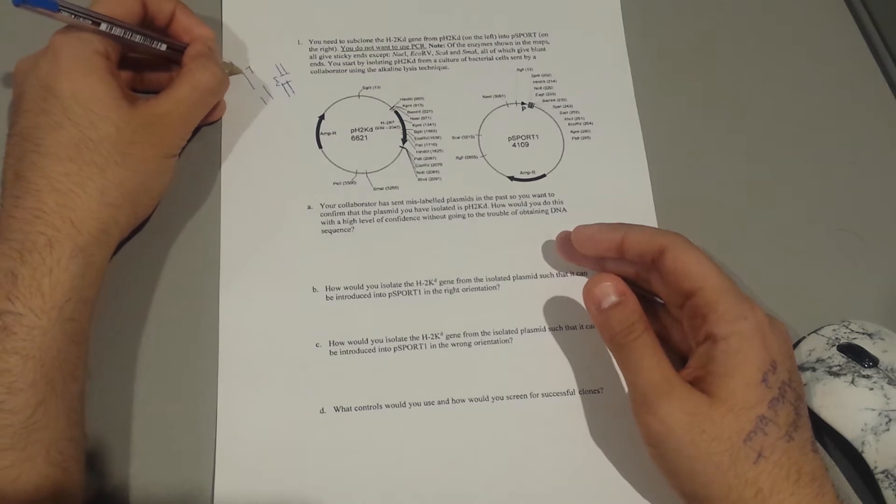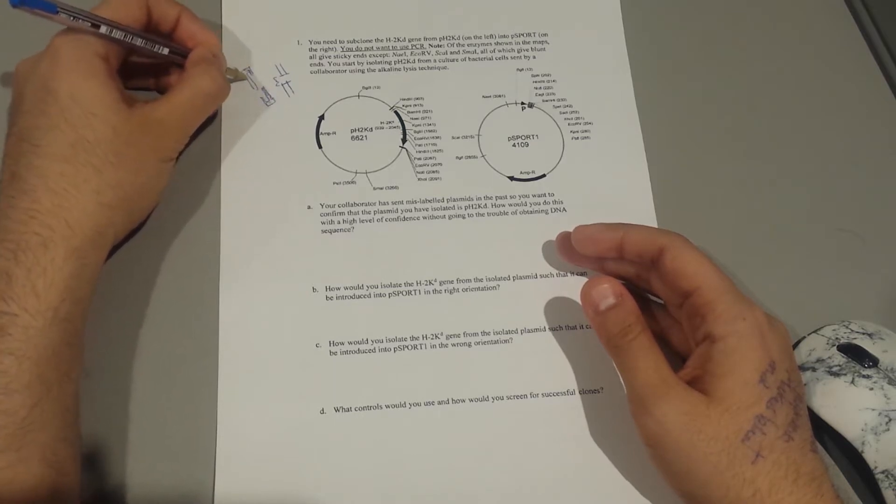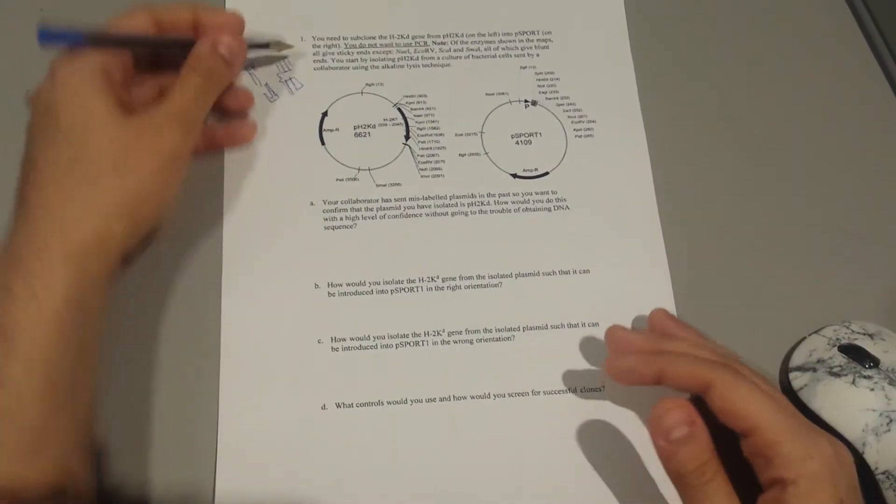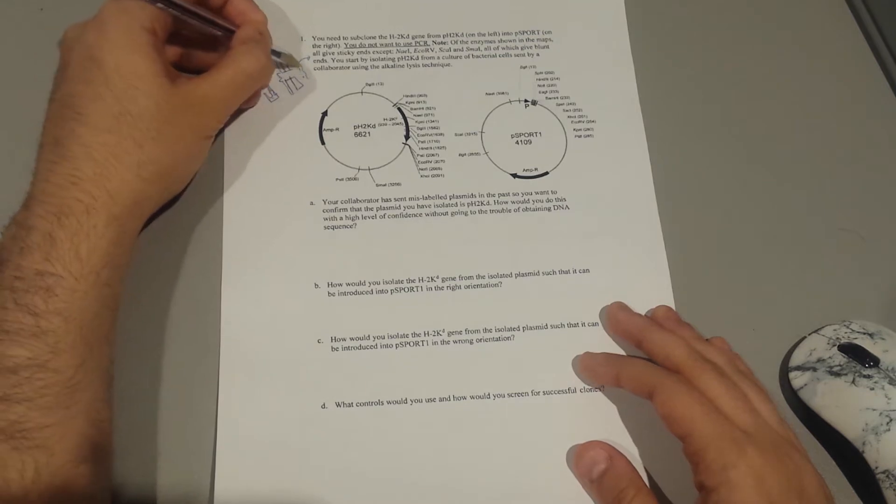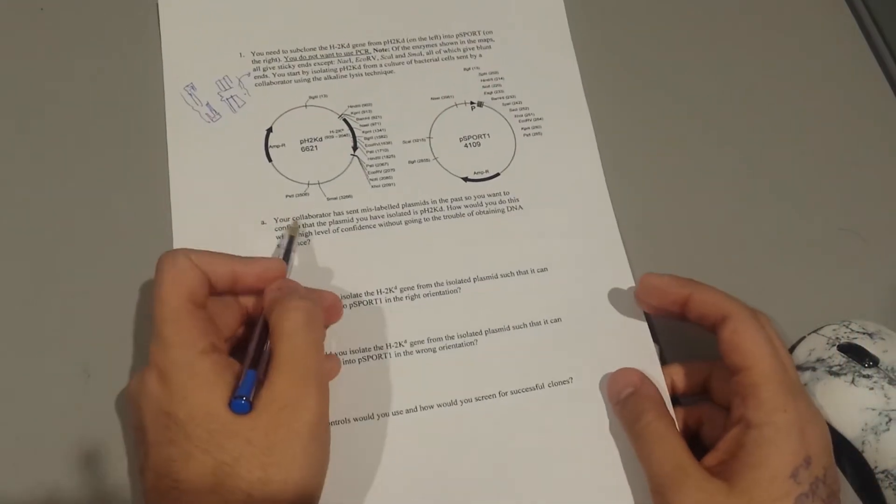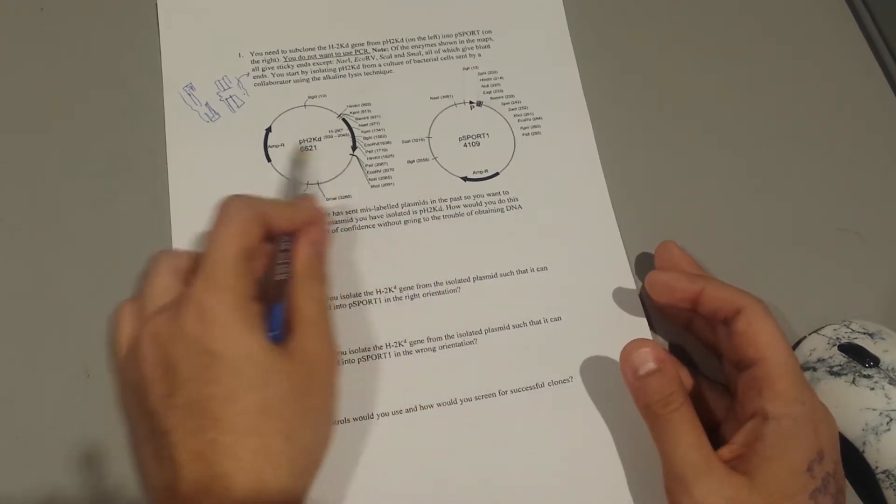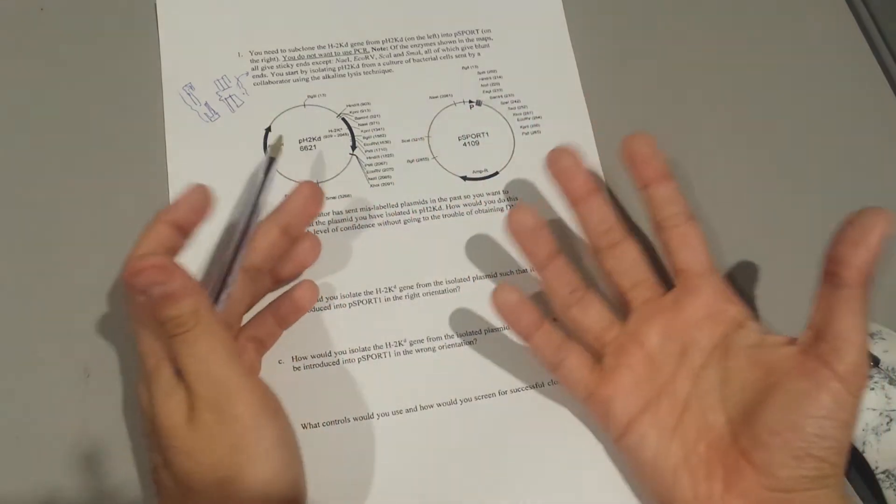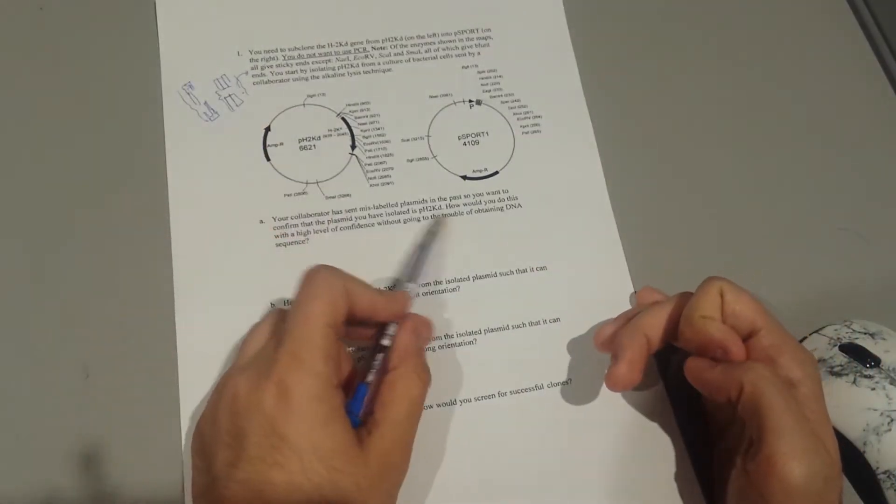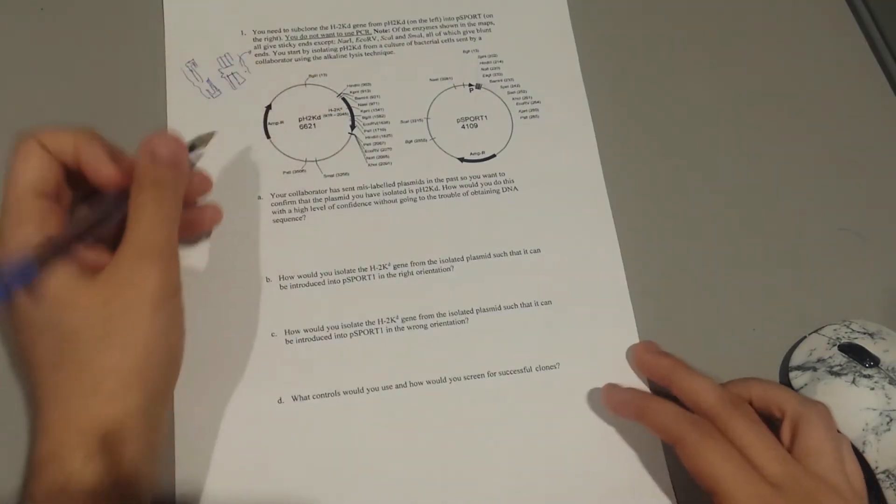Now it's asking you that your demonstrator has sent mislabeled plasmids in the past, so this time you want to ensure that the plasmid you have is the specific PH2KD. How would you test with high confidence that you are dealing with PH2KD?